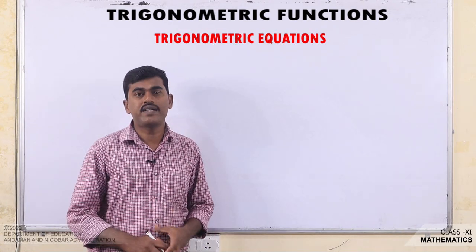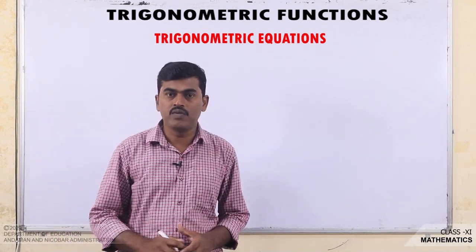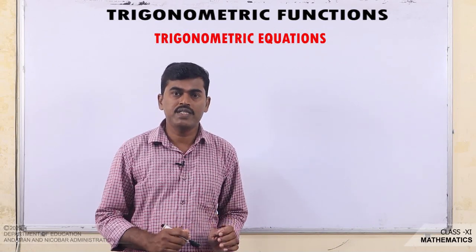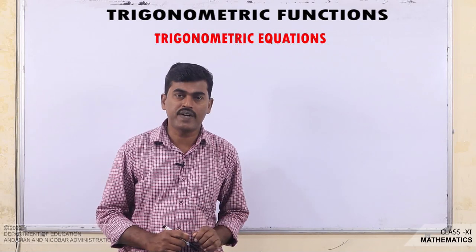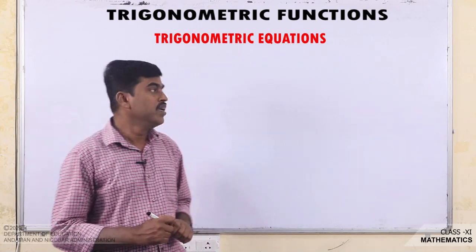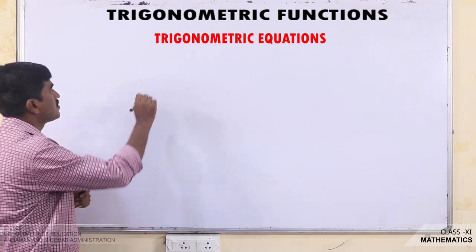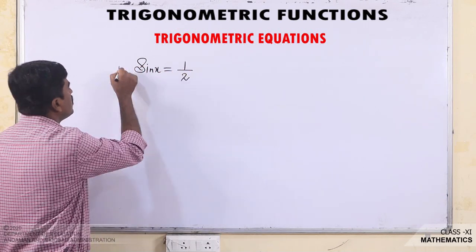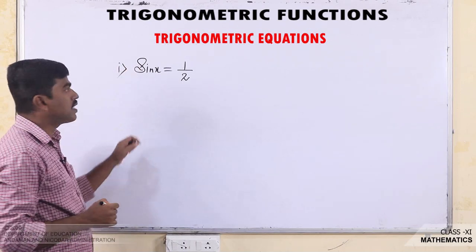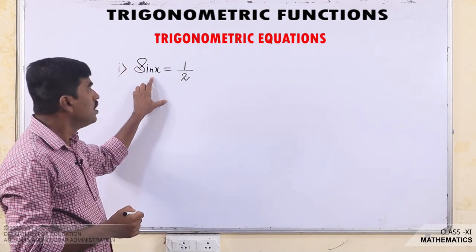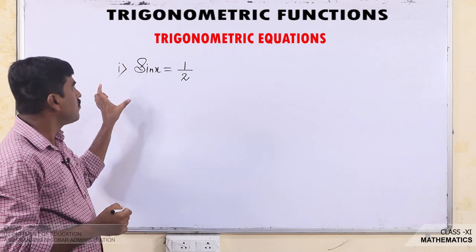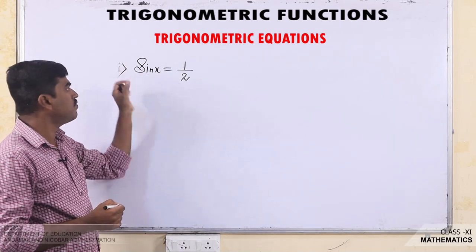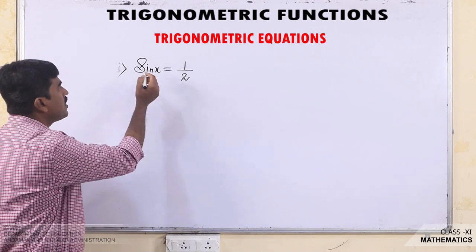What is meant by a Trigonometric equation? An equation involving Trigonometric functions of a variable. For example, if sin x equals 1/2, this is a Trigonometric equation because this equation involves Trigonometric functions of variable x.